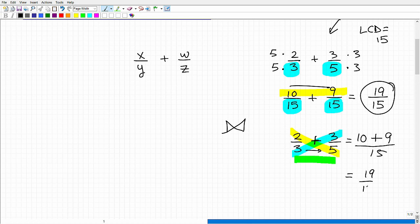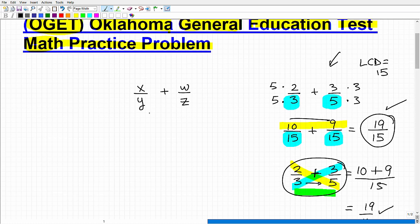And when we simplify this, I'm going to end up with 19 over 15, same as this. This is a fantastic shortcut for both adding and subtracting fractions, and it becomes extremely handy when you're dealing with algebraic fractions, something like this.